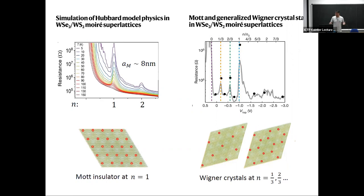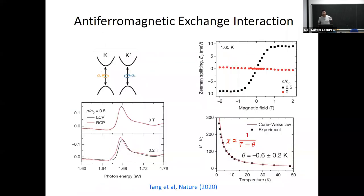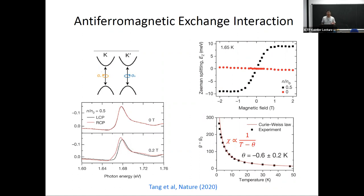Another important feature of Mott physics is that once the Mott insulator is formed, charges are localized but spins are active degrees of freedom. One can probe the magnetic response using circular dichroism — looking at the difference in optical reflection using left and right circularly polarized light as a function of magnetic field. At zero field, time-reversal symmetry gives the same signal for left and right. Once a small magnetic field of 0.2 Tesla is applied, the exciton energy peak shifts depending on left or right circular polarization.